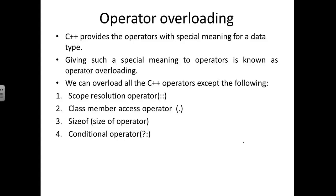Next, let us move to operator overloading. Under polymorphism we have seen compile time polymorphism and run time polymorphism. Under compile time polymorphism it is classified into two types: one is function overloading and the second one is operator overloading. So now let us go for operator overloading.